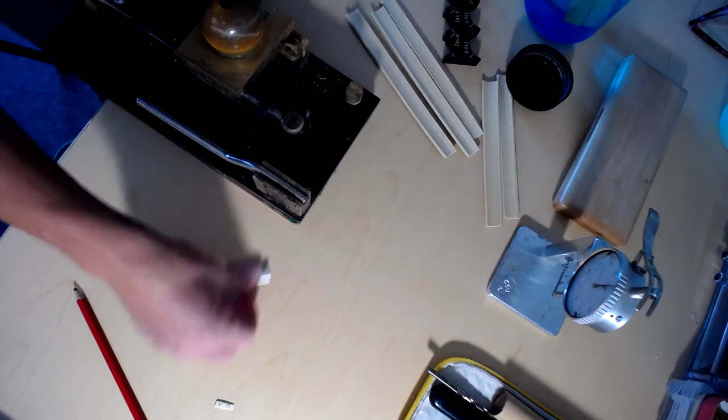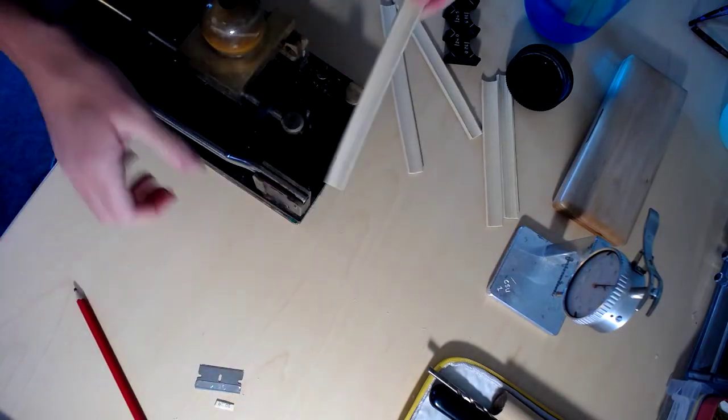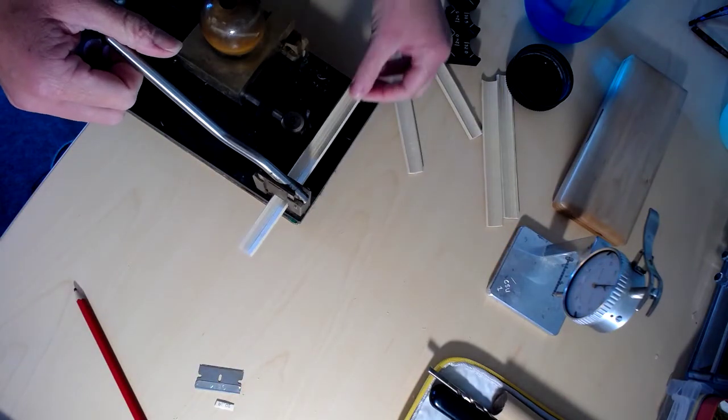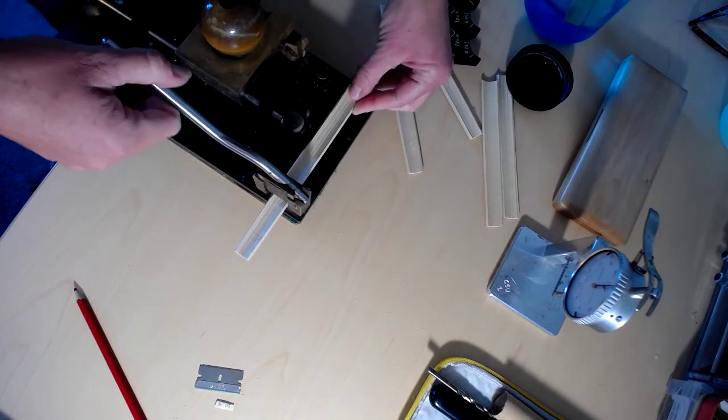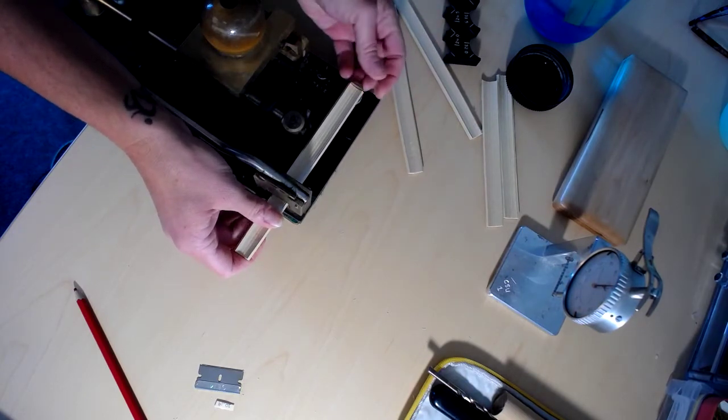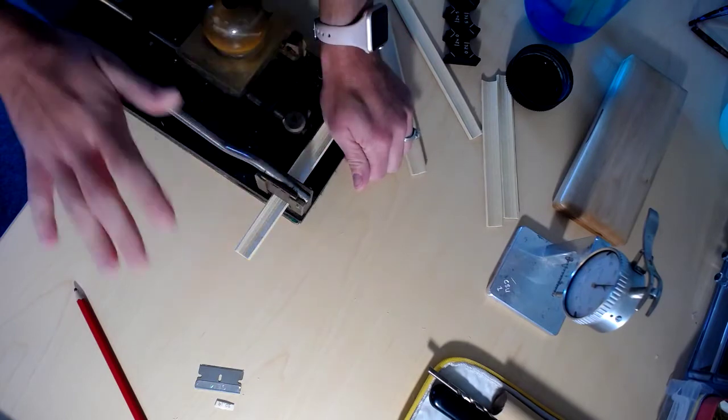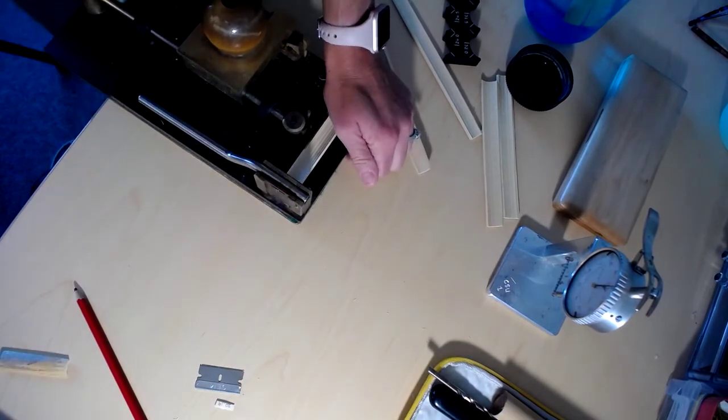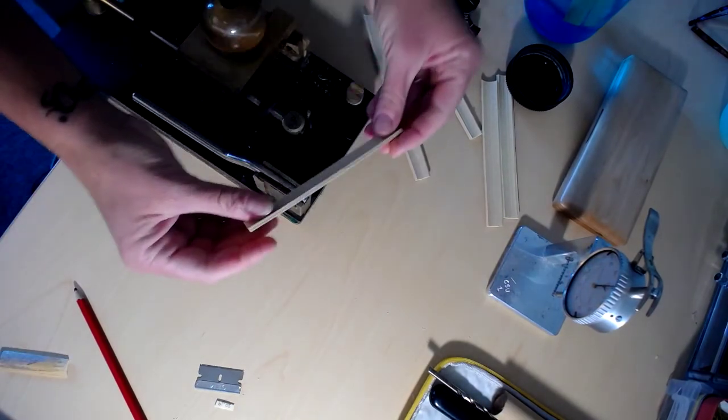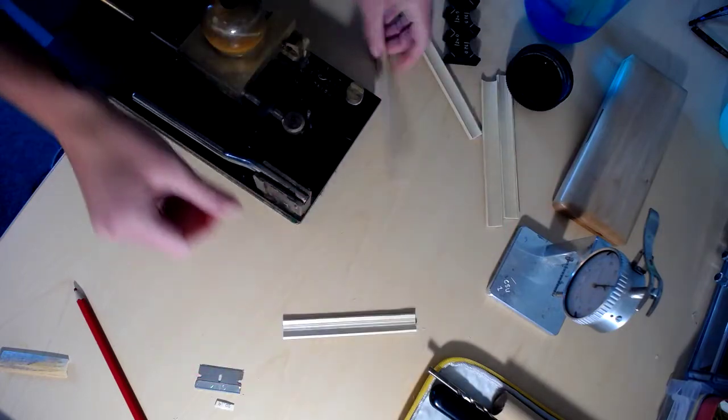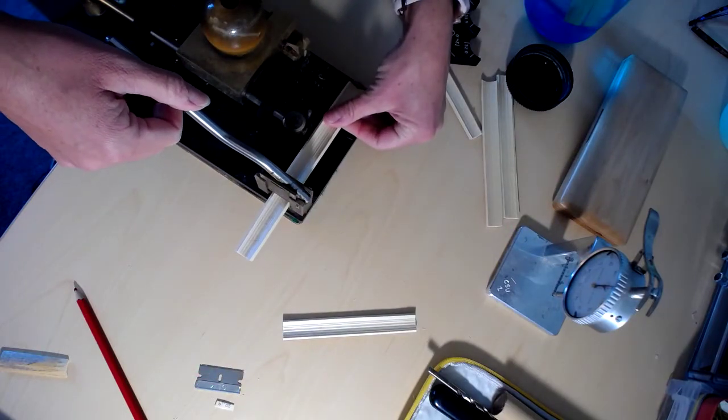There's a blade in there. Careful. So I'm going to take the part that I marked, have already identified as the asymmetrical. Line that up with the bumper on the end. Hold it in place. And off with its head. So now I've got a nice 120mm piece of cane.